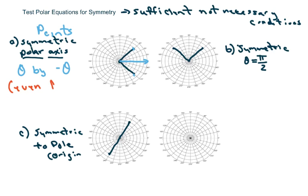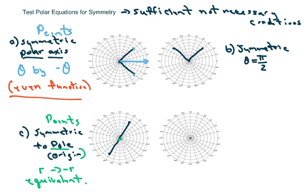Now for the origin one, let's do c first. With points with respect to the pole or the origin, how you test that is you replace r with negative r, and if you get an equivalent result, then it is symmetric to the pole or the origin. This is similar to our odd function, so that would be like the sine function.